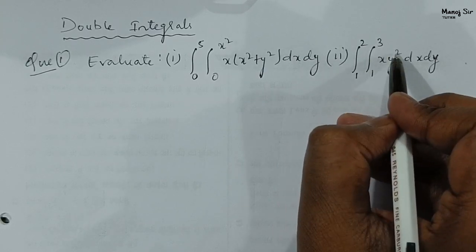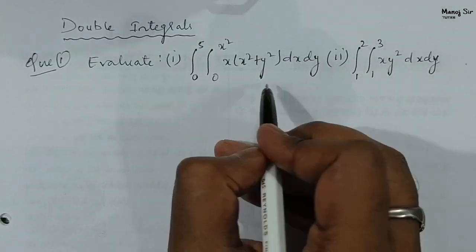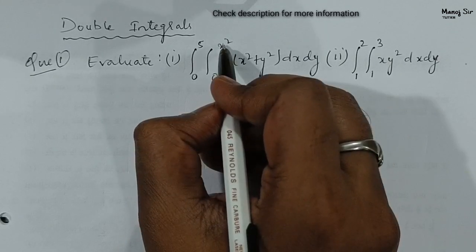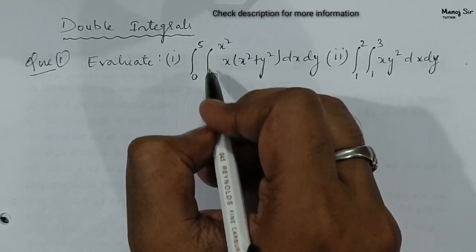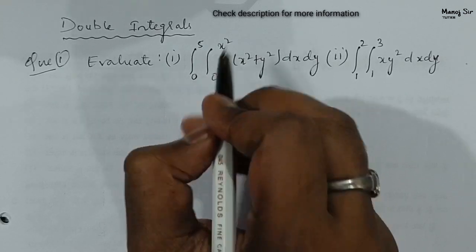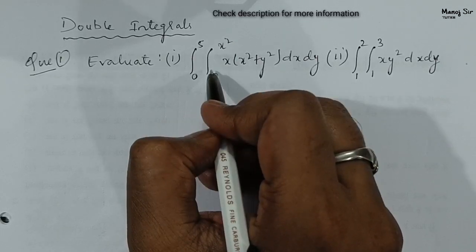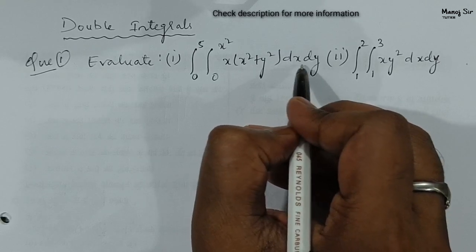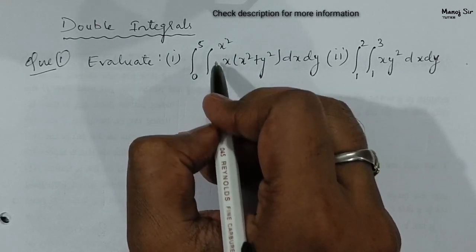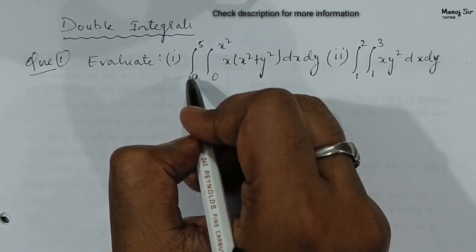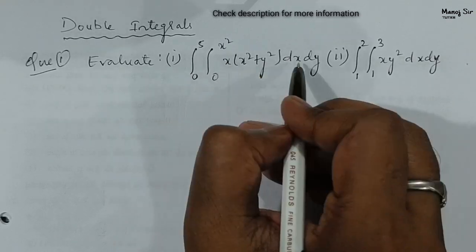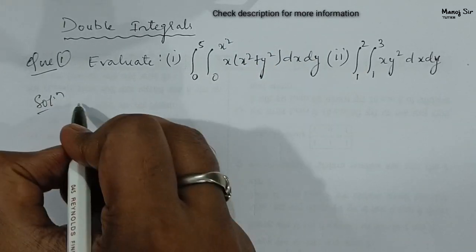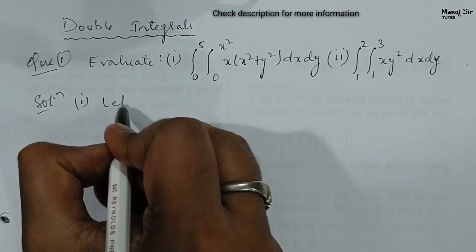In the second problem we have integral one to two, integral one to three, of x y square dx dy. In the first problem, the inner limit is zero to x square, so we can say this is the limit for y. Since this is the limit of y, we need to write dy first, then dx. We need to change the order because this is the limit of y, and if this is the limit of y, this will be the limit of x.